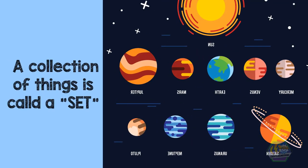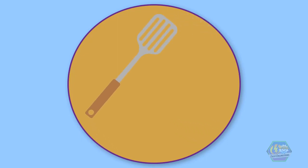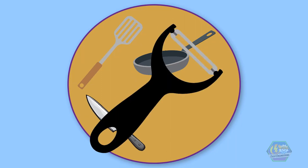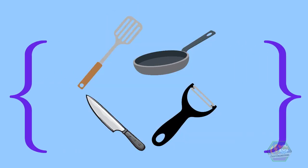Another example of a set is the items you use when cooking. This includes a spatula, a pan, a knife, a peeler and so on. You write sets inside curly brackets like this.